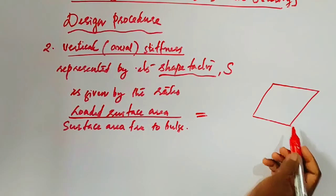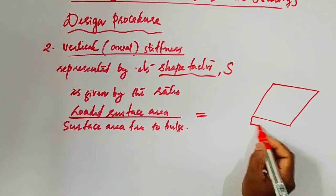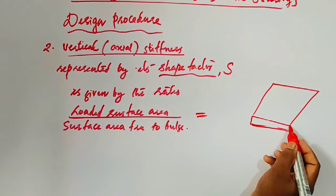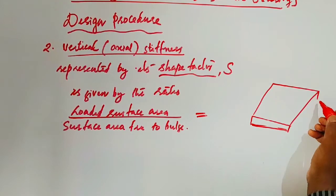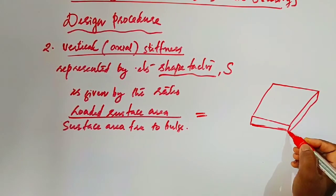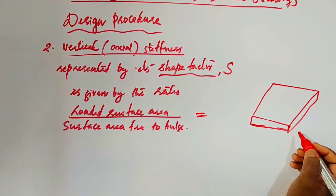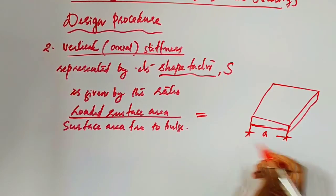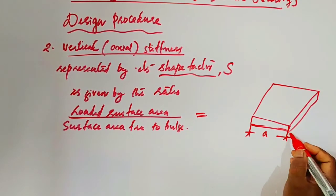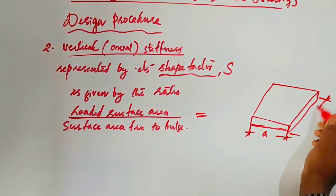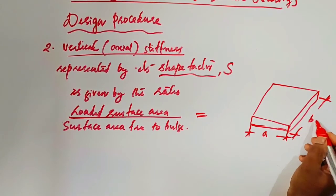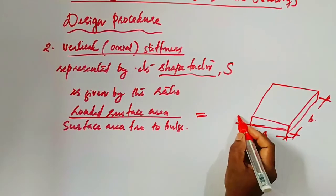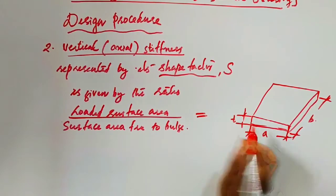Unreinforced elastomeric bearing. This is A, width, and this is length. It is denoted by b, small b. And thickness is denoted by t.